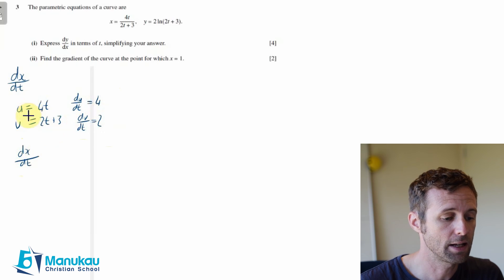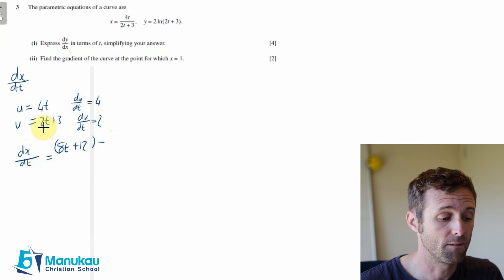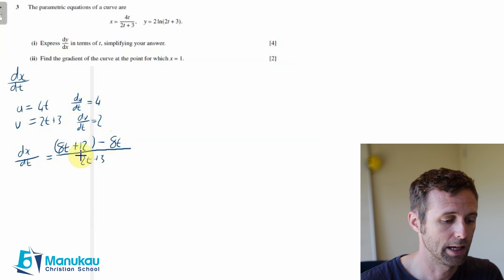dx/dt is equal to v times du/dt, which is 4 times (2t plus 3), which equals 8t plus 12. I'll put a bracket around that. Then we're going to subtract from that u dv/dt, which is 8t, and we're going to put that all over v squared, which is (2t plus 3) squared.